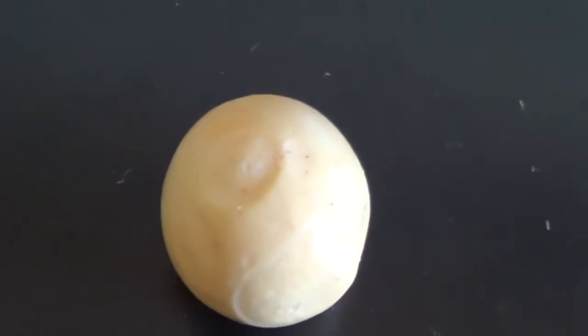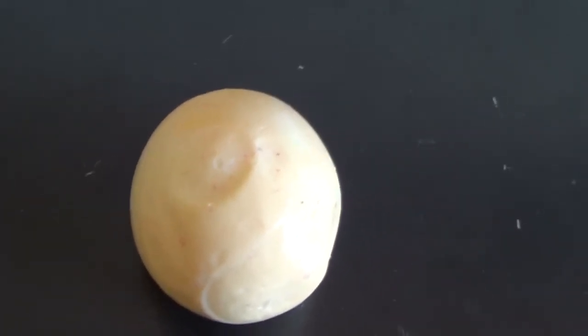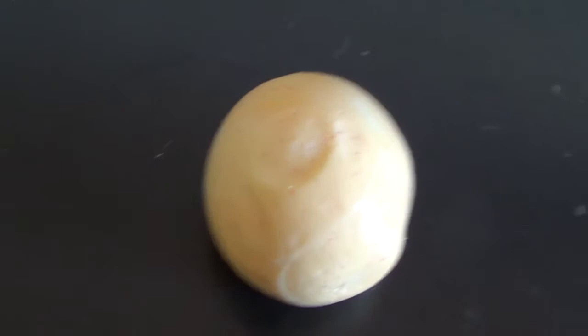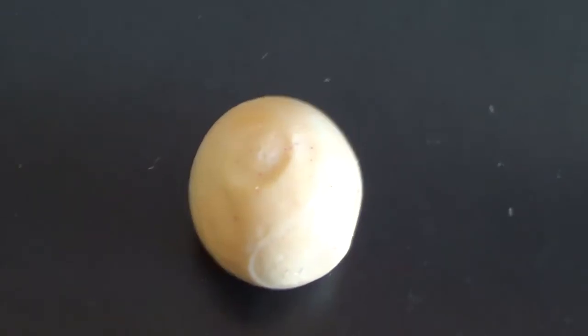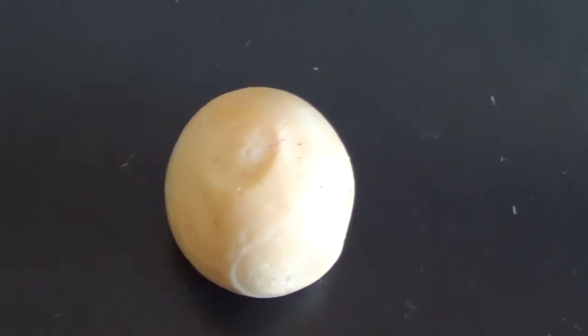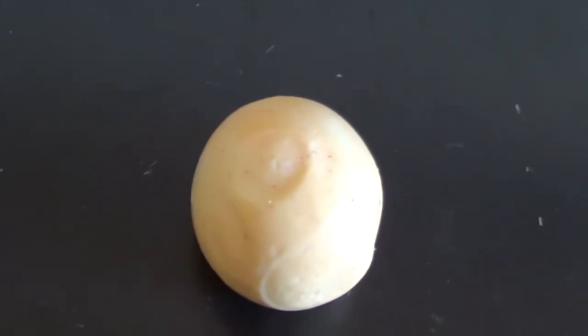And now here we have the scrambled egg. After the shell has been removed, you can see the yolk and the white are nicely mixed together.